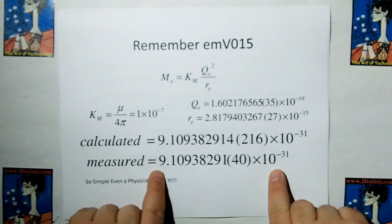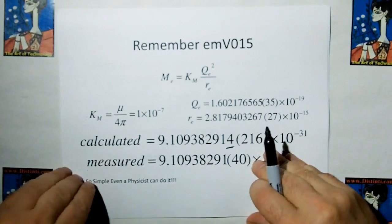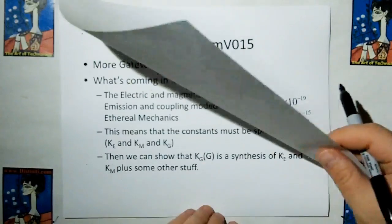And the measured value is this. So we are one significant digit better. So simple even a physicist can do it.